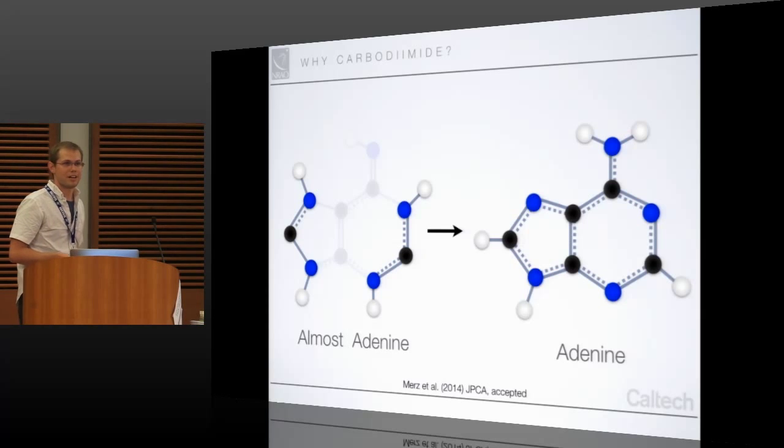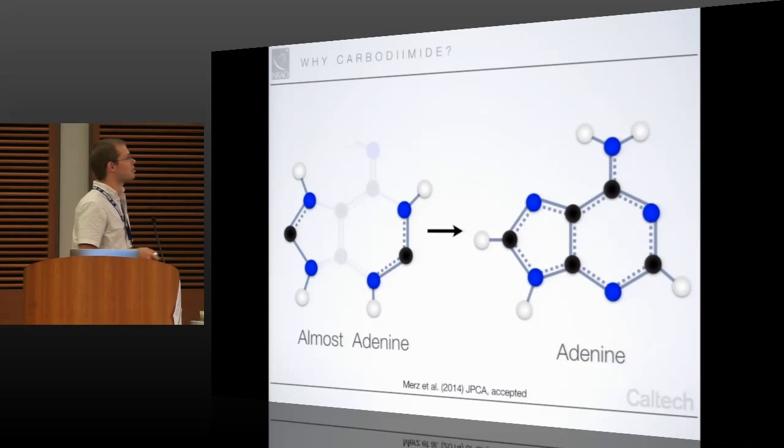And actually, as it turns out, the theorists say you don't even need ices to make almost adenine. All you need is two carbodiimide molecules in this backbone, and all three don't even have to be together at the same time. You can piece this together one by one, barrierlessly in the gas phase.